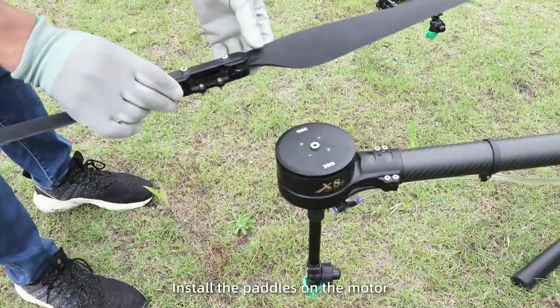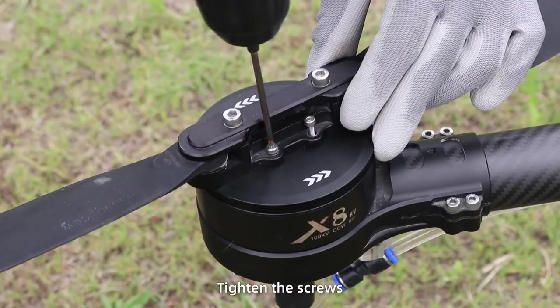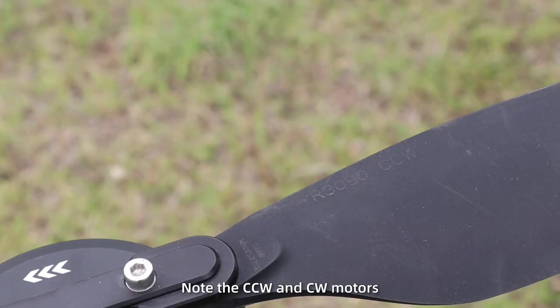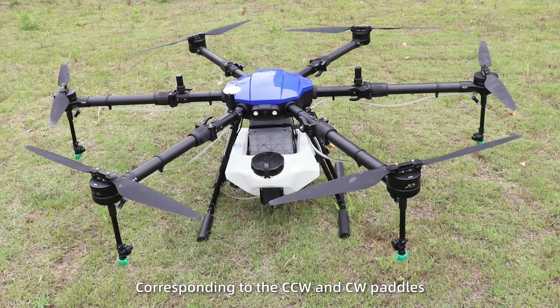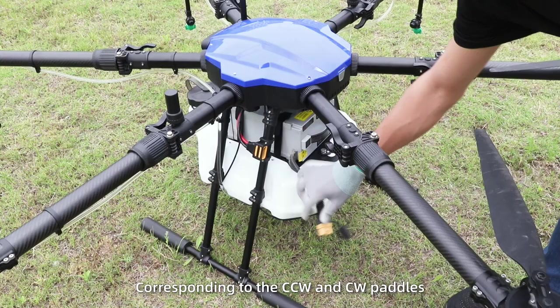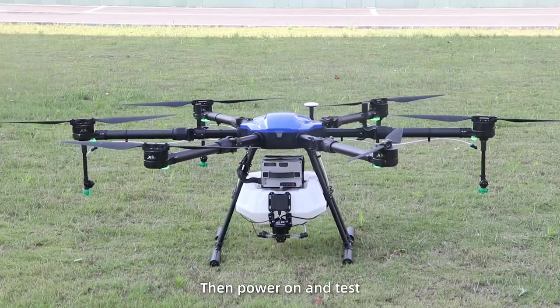Flash test. Power off. Install the propellers on the motor. Tighten the screws. Note the CCW and CW motors corresponding to the CCW and CW propellers. Then power on and test.